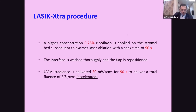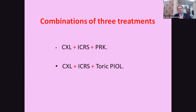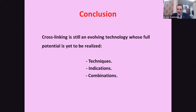In the LASIK extra technique, a high concentration of riboflavin 0.25% is applied for 90 seconds on the interface, then washed, followed by ultraviolet irradiation at 30 milliwatts per square centimeter for accelerated cross-linking. Cross-linking stromal haze can further deteriorate vision quality. Other combinations include cross-linking plus corneal rings plus PRK, or cross-linking plus rings plus toric IOL. In conclusion, cross-linking is still an evolving technology whose full potential in technique, indication, and combination is yet to be realized, and it promises to be very important in the future.